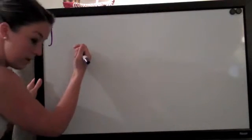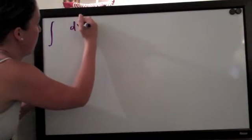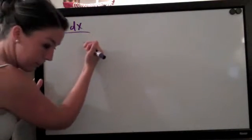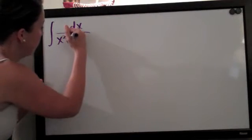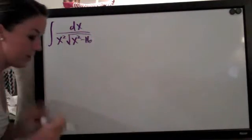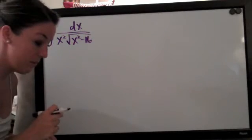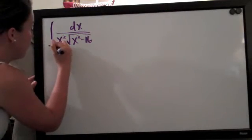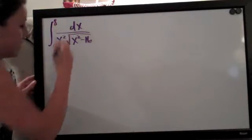Hi everyone! Welcome back to integralcalc.com. We're going to be doing a trigonometric substitution problem today. This one was actually submitted by someone on the website. The problem is the integral of dx over x squared times the square root of x squared minus 16, with defined limits from 4 to 8.